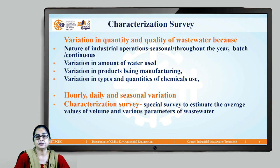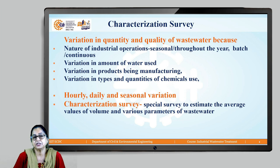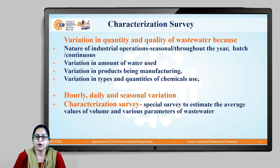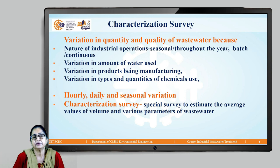Now let us focus on characterization survey. From industry to industry, the processes are different because products are different. In similar industries also, the processes used are different, raw materials are different, and manufacturing quantities are different. Some industries operate throughout the year continuously. Some are seasonal, like the sugar industry, and some use batch processes like dairy. Hence there is significant variation in quantity and quality of wastewater.